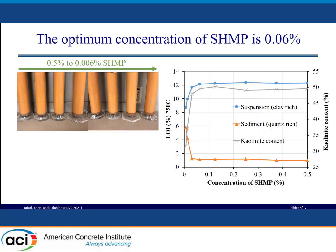To determine the optimum concentration of the sodium hexametaphosphate, the sedimentation experiment was repeated at different dosages from 0.5% down to 0.006%. The loss on ignition (LOI) of the suspension and the sediment layer was measured to evaluate the clay content of each fraction. In addition, the kaolinite content of the suspension was calculated using a simple oven and balance method, in which the mass change of suspension due to heating from 400°C to 600°C — the lower and upper dehydroxylation temperature of kaolinite — was measured. It was observed that the LOI of the suspension, which is the blue curve, increased initially with increasing sodium hexametaphosphate dosage but remains constant after that. Similarly, the kaolinite content of the suspension, the gray curve, plateaus after a point. As such, 0.06% sodium hexametaphosphate was chosen for purification.